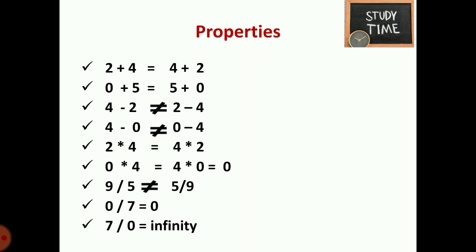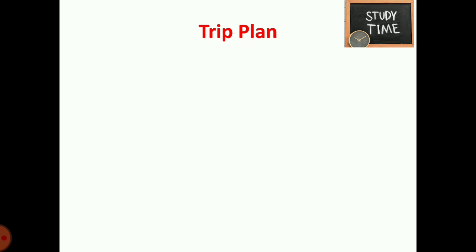Properties of arithmetic operations: 2 + 4 = 4 + 2 (addition is commutative), but 4 − 2 ≠ 2 − 4 (subtraction is not commutative). Zero added to any number gives the same number. For multiplication: 2 × 4 = 4 × 2 = 8, and 0 × 4 = 0. For division: 9 ÷ 5 ≠ 5 ÷ 9, 0 ÷ 7 = 0, and any number divided by 0 gives infinity.